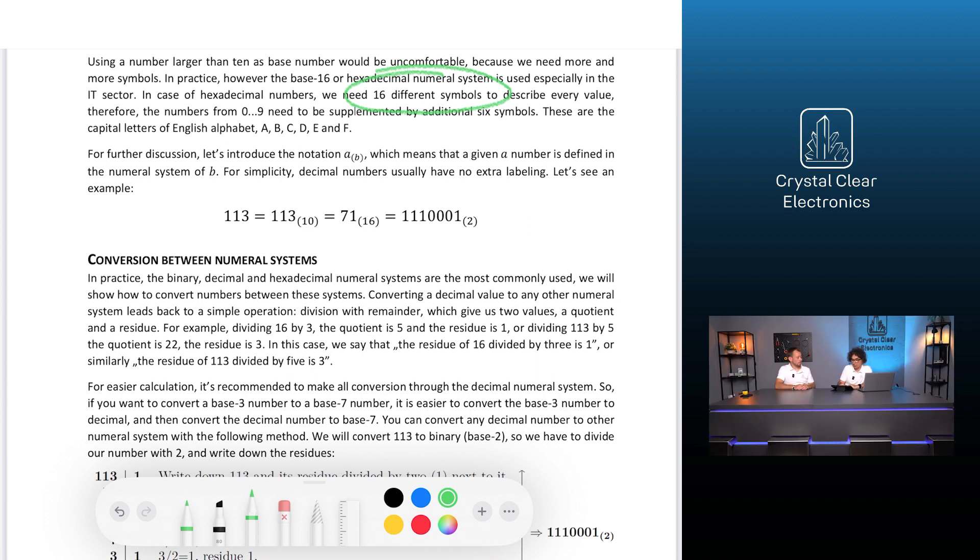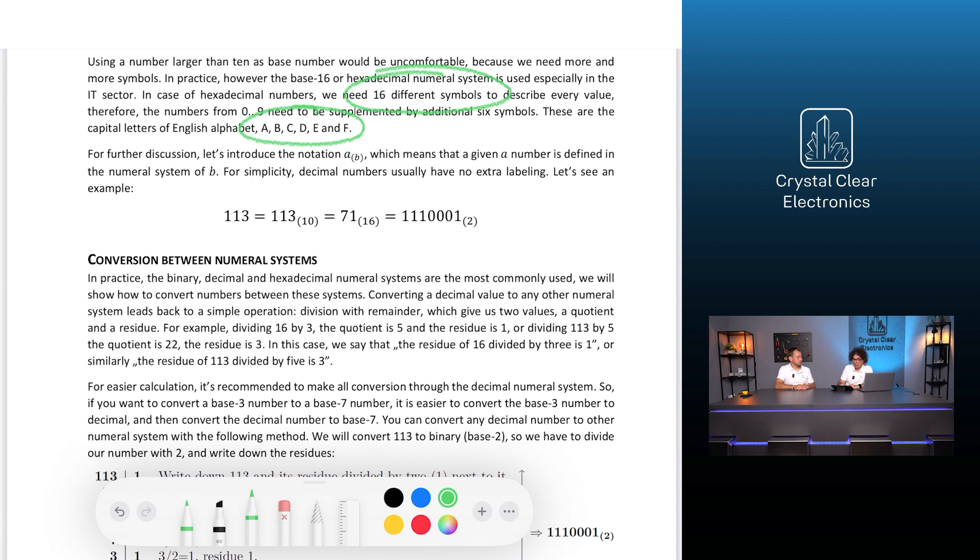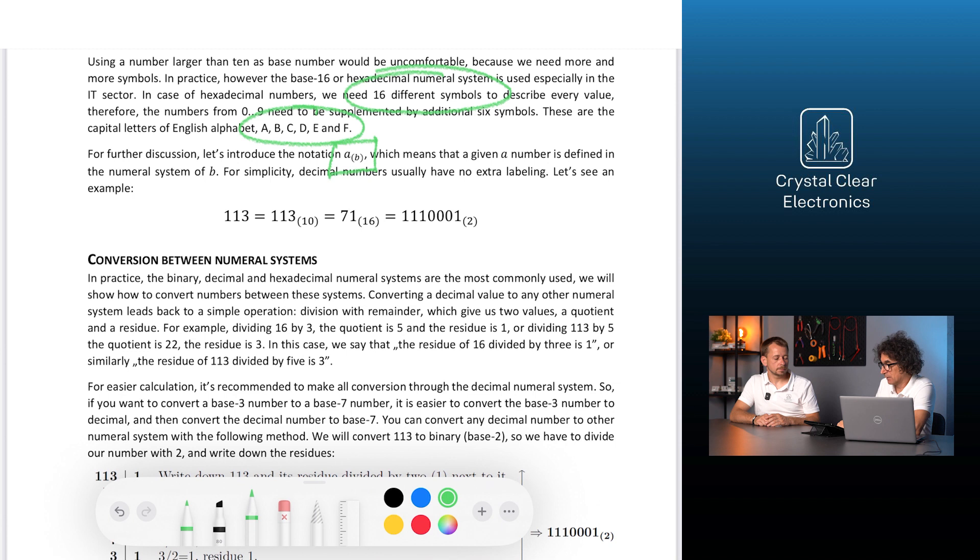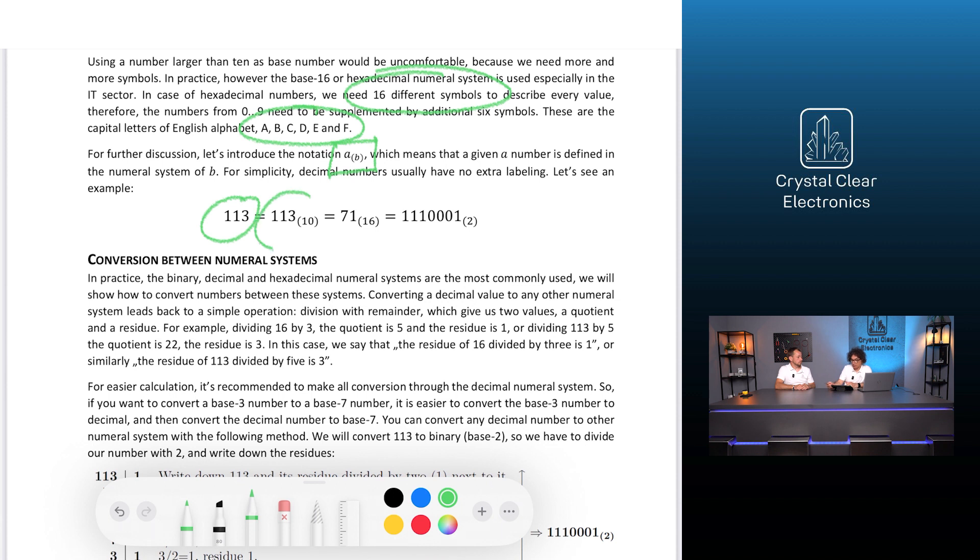These are the capital letters of the English alphabet A, B, C, D, E, and F. For further discussion, let's introduce the notation A brackets B, which means that a given A number is defined in the numeral system of B. For simplicity, decimal numbers usually have no extra labeling. Let's see an example. 113 brackets 10 is equal to 71 brackets 16 and is equal to 111001 brackets 2.